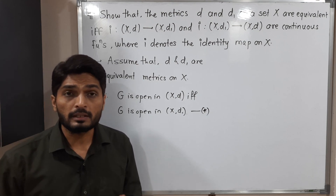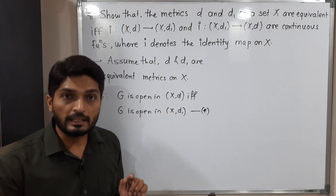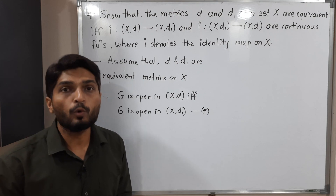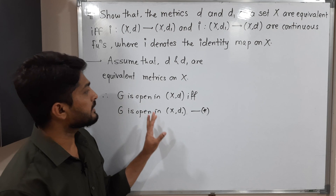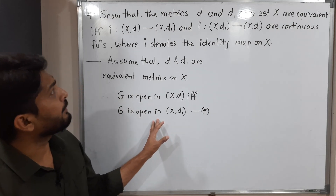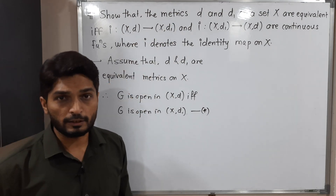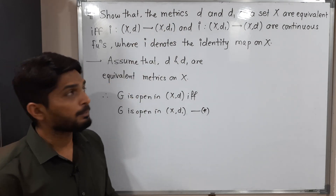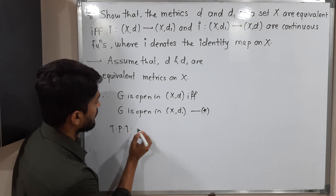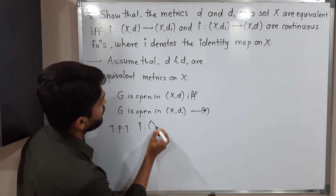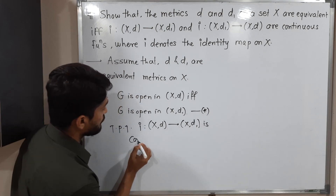The same thing can be written as: if G is a d-open set then G is d1-open, and if G is a d1-open set then G is d-open. Call this statement (★). Now we have to prove that the identity map i from (X,d) to (X,d1) is a continuous function.